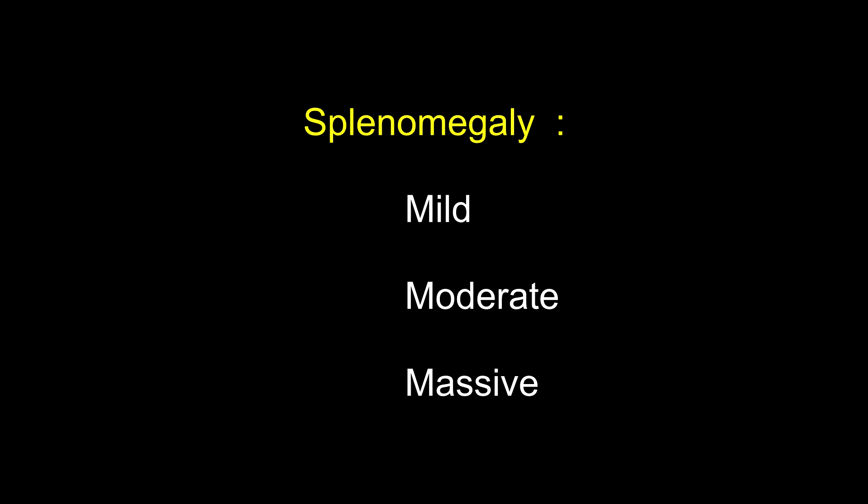Can spleen be tender? Yes, in infective endocarditis and in splenic infarcts, spleen may be tender. What are the causes of hepatosplenomegaly? Hepatosplenomegaly with mainly liver is seen in viral hepatitis, enteric fever, storage disorders, congestive cardiac failure and constrictive pericarditis. Hepatosplenomegaly with mainly spleen is seen in infections like malaria, Kalazar, infectious mononucleosis and miliary tuberculosis, and blood disorders like leukemias, lymphomas and chronic hemolytic anemias.